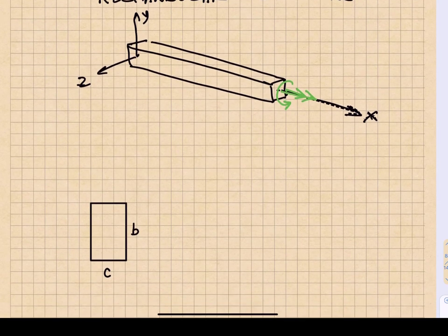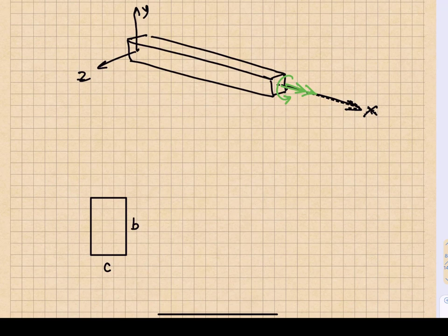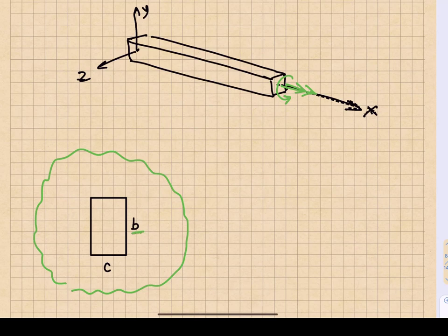Now this is a rectangular cross section. So if we were to zoom in on this cross section, as shown here, and if the long side is b and the short side is c, if you look carefully at this, and if I were to remove a small materials element right here...